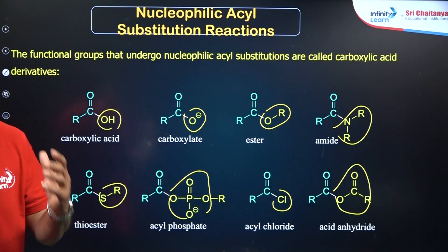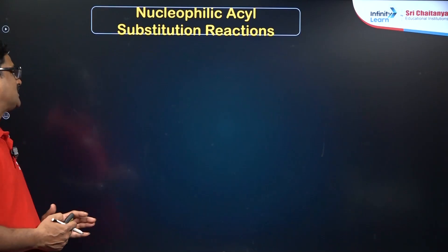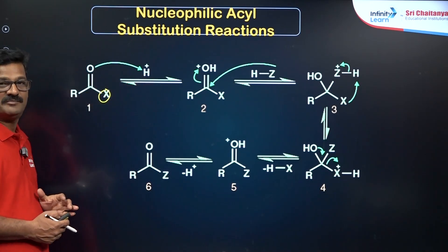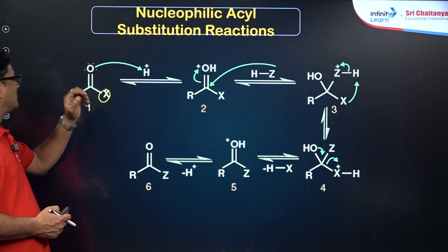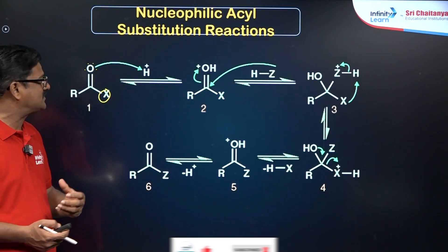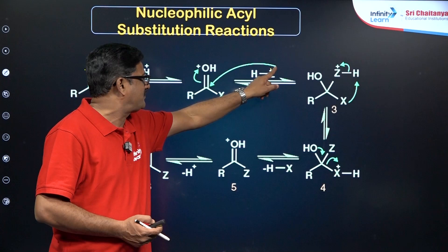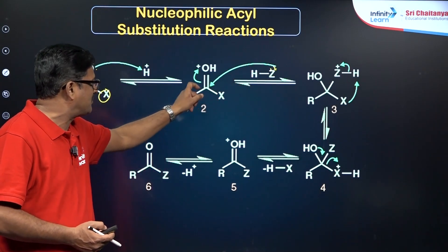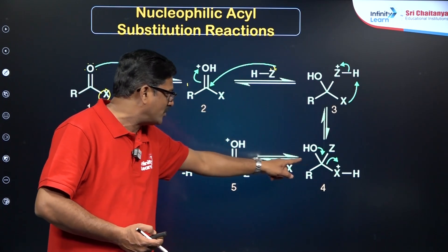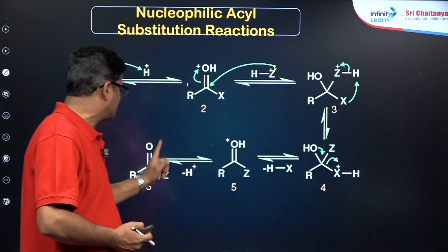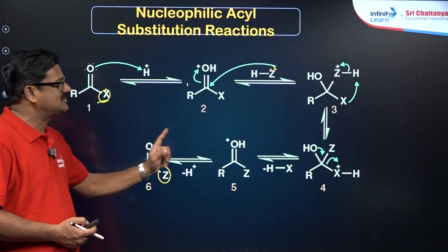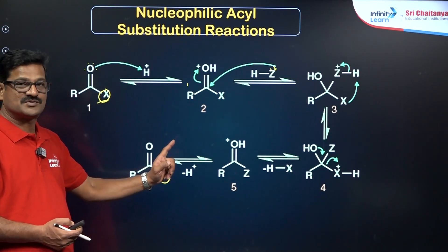These acid derivatives undergo nucleophilic attack based on an addition-elimination mechanism. The acyl group — the C=O carbonyl group — is first activated, making this carbon more positive for attack by the nucleophile. Once the nucleophile attacks at the positively charged carbon, a tetrahedral intermediate is formed. That tetrahedral intermediate then loses the existing leaving group, and the nucleophile substitutes in its place.